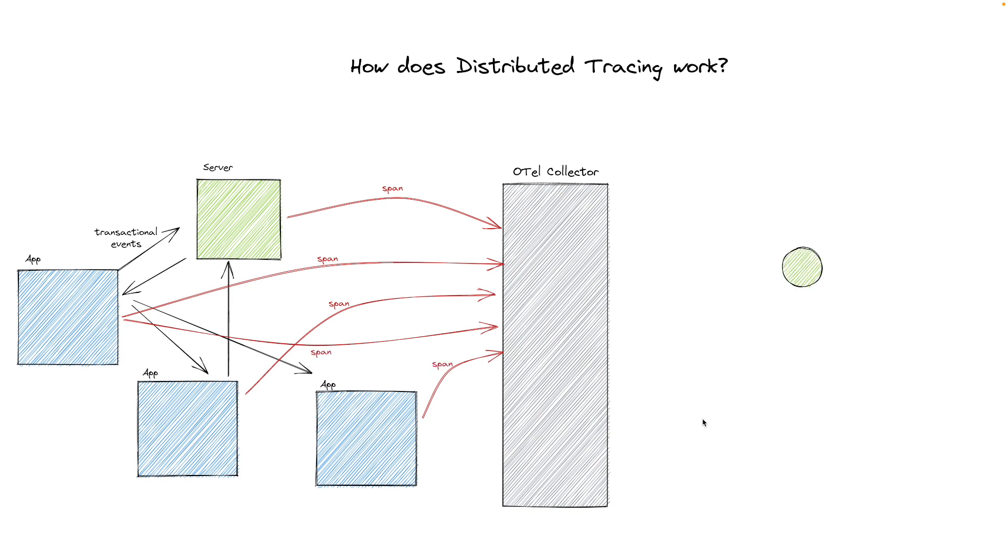The receiver in the OpenTelemetry Collector will receive the generated spans, process them into standardized OpenTelemetry traces, and send every span to the configured exporter.